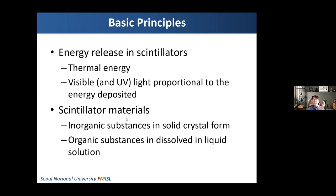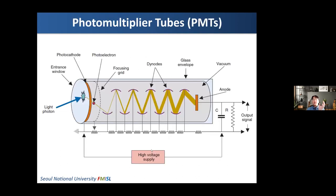Some scintillation materials are inorganic substances in solid crystal form, and some are organic substances dissolved in liquid solution. For in vivo imaging, we mostly use inorganic substances, but for in vitro assay, we also use organic substances in solution form. In scintillation detectors, the scintillation material is an important component, and another important component is the photosensor that measures the visible or UV photons generated by the scintillators.